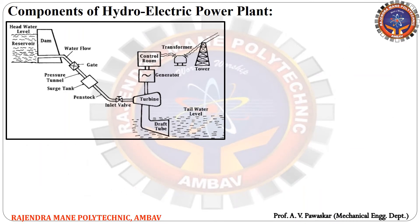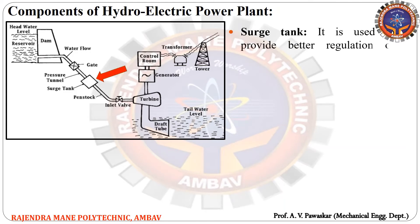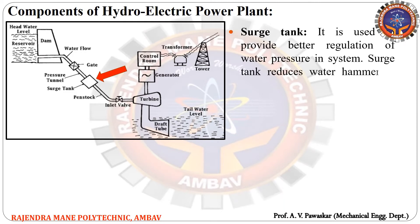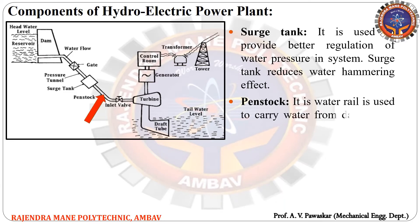The next component is the surge tank — it is used to provide better regulation of water pressure in the system, and it reduces the water hammering effect. The next component is the penstock — it is a water pipe used to carry water from the dam to the turbine.